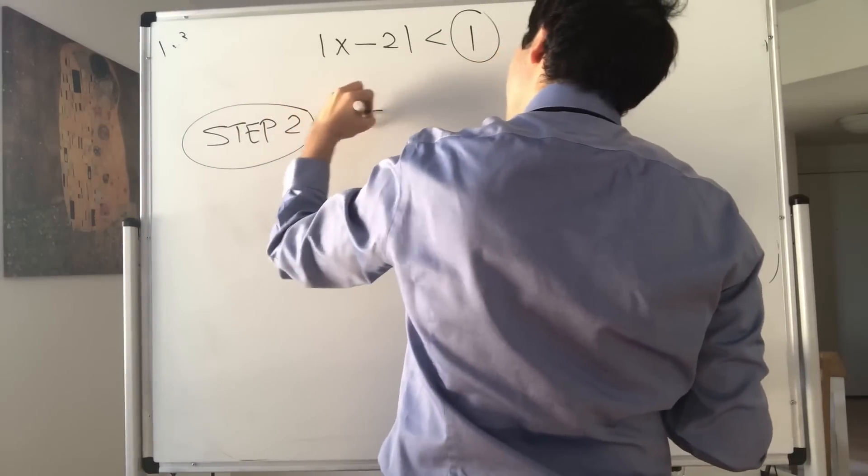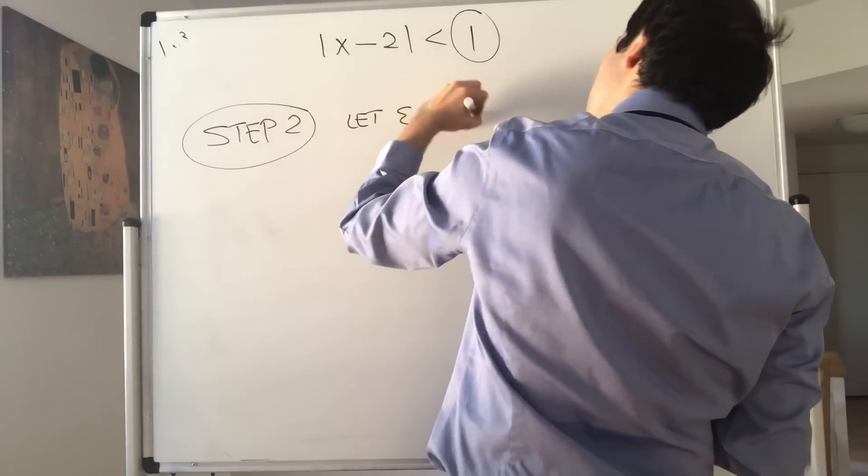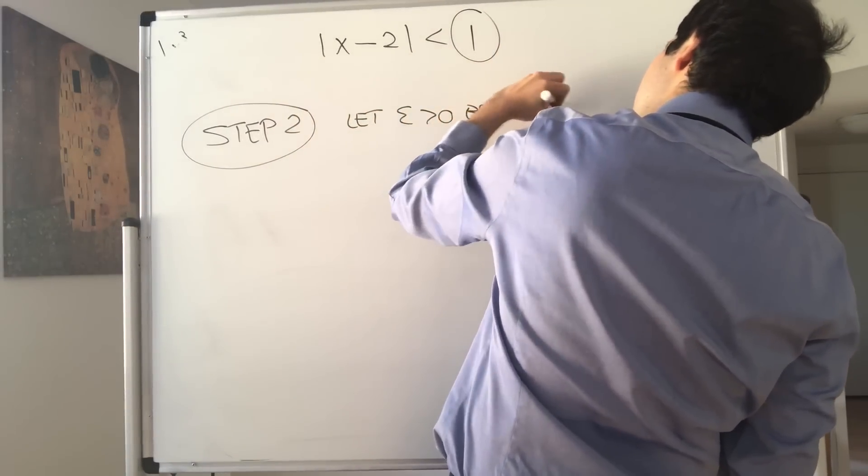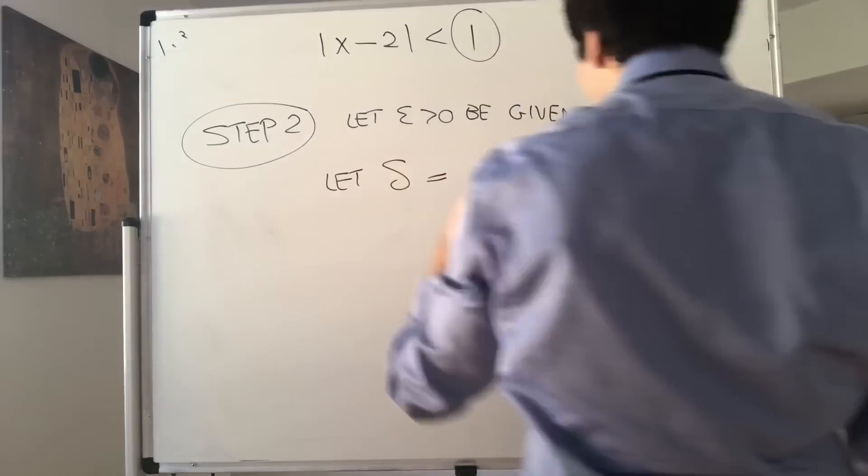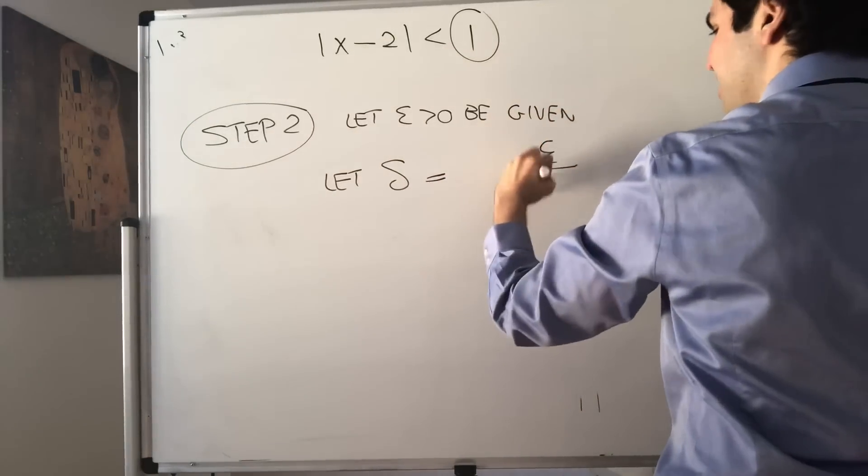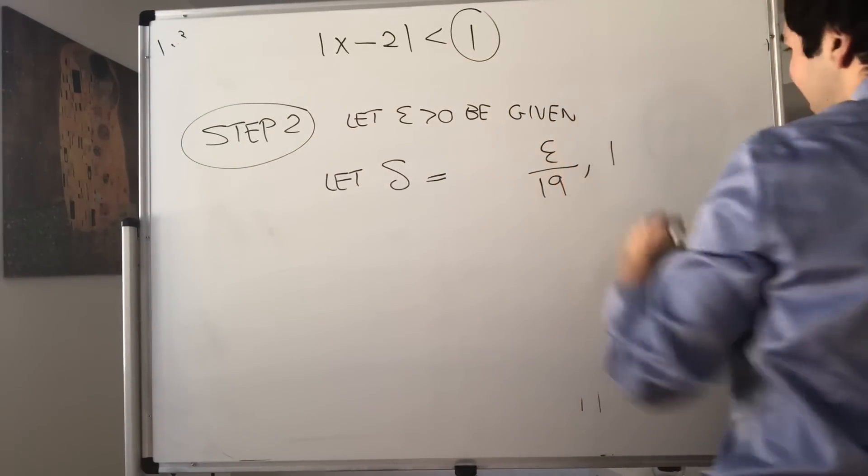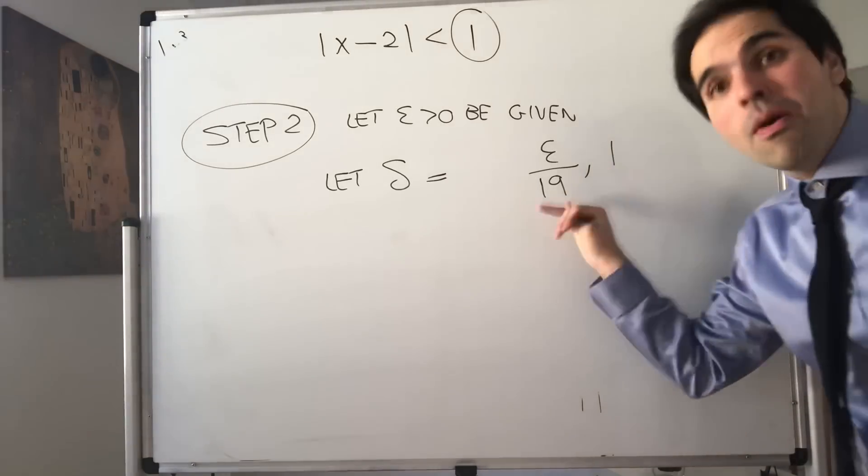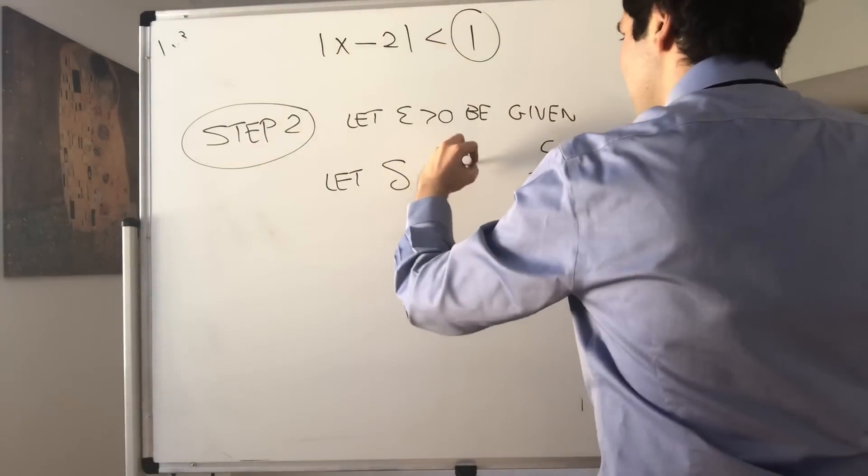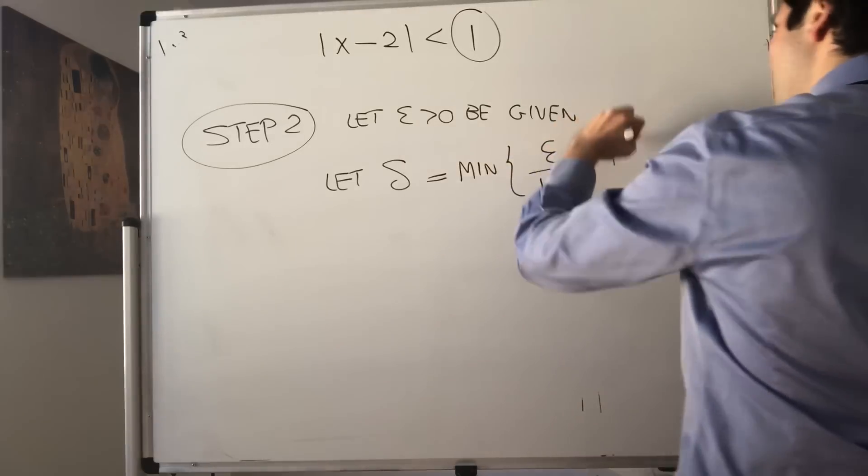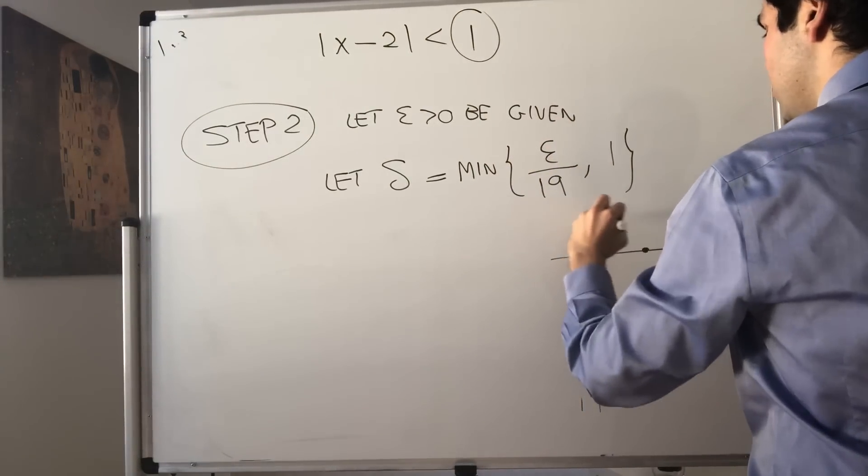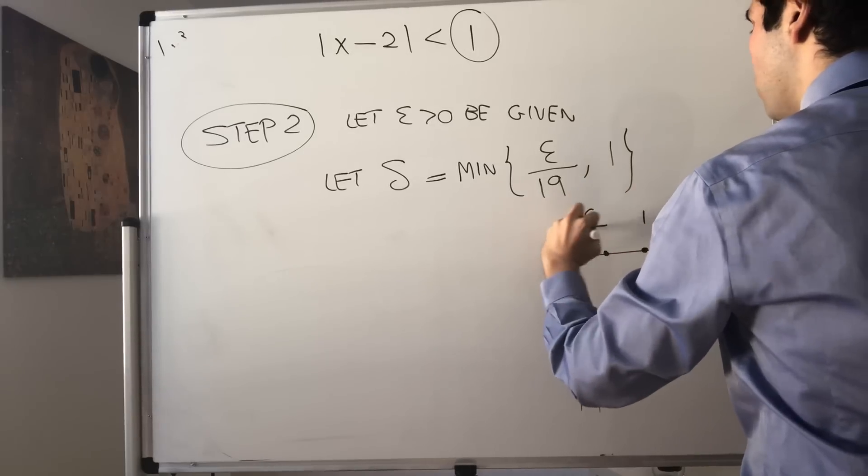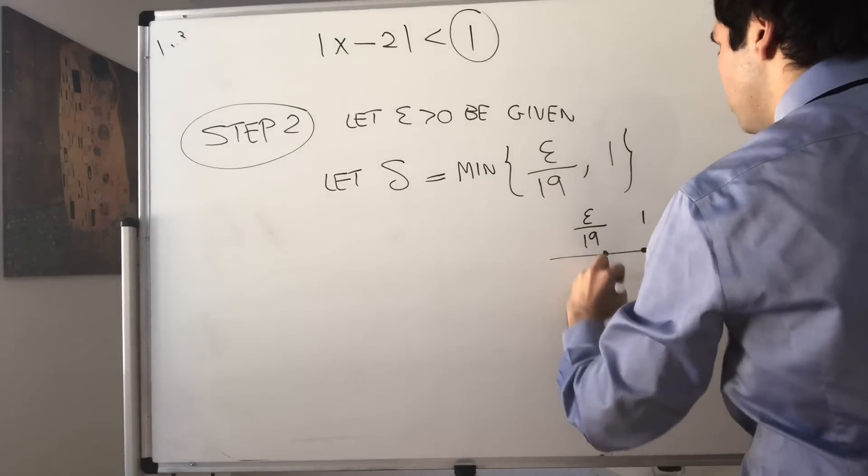Let epsilon be given. Let delta not be epsilon over 19 and not be 1. You want it to be the smaller one of the two, so the minimum of epsilon over 19 and 1. If this is 1 and this is epsilon over 19, that would be your delta.